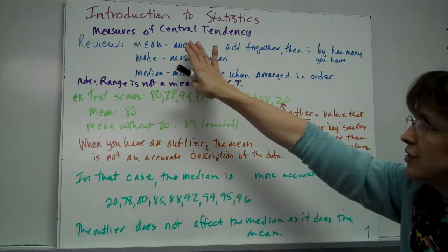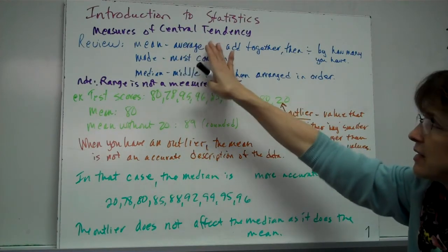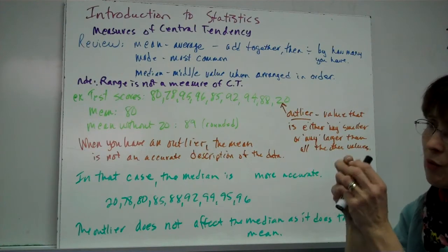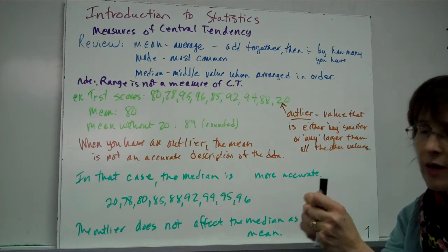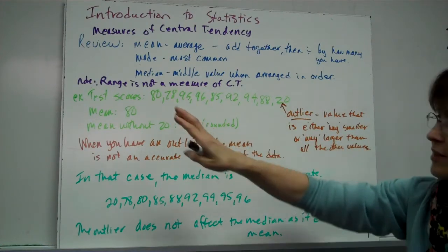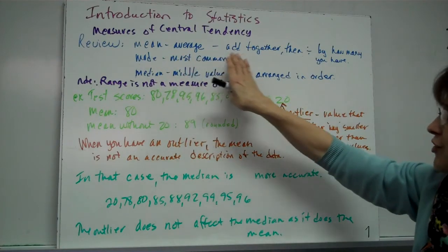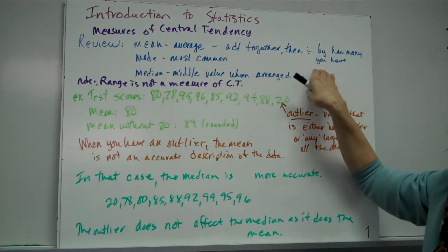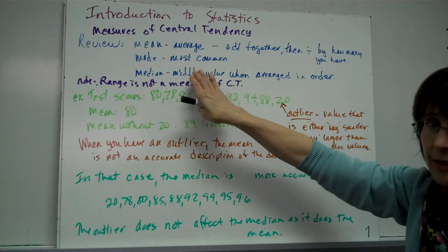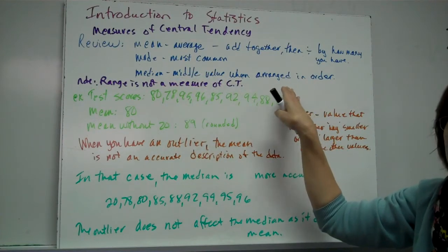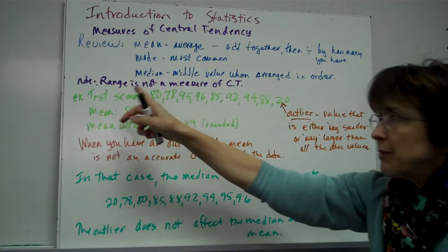If you think about it, central tendency just means it's a central tendency. It's all about the study of what numbers tend to show, and we'll talk more about this as we go. But the mean, as you know, is the average. You add together, and then you divide by how many you have. The mode is the most common. The median is a middle value when you arrange them in order.